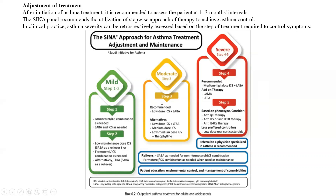Step three's recommended option is low-dose inhaled corticosteroids with a long-acting beta agonist, with alternatives available. One alternative to mention is theophylline, which is not very much recommended as there are better alternatives. Patients taking inhaled long-acting beta agonists without inhaled corticosteroids are at risk of asthma attack, hospitalization, and death. So whenever we give a long-acting beta agonist, it should be combined with something like montelukast.